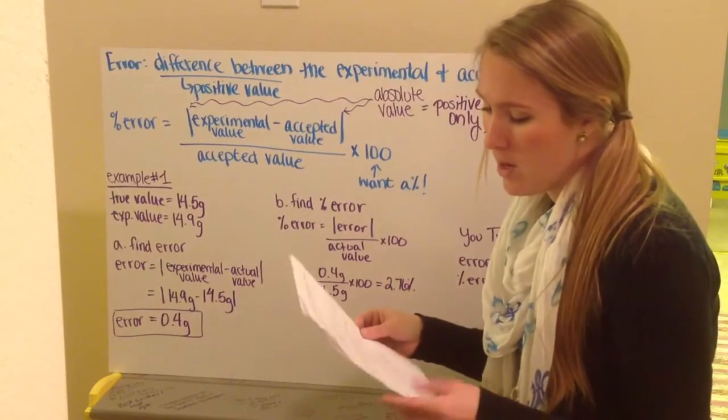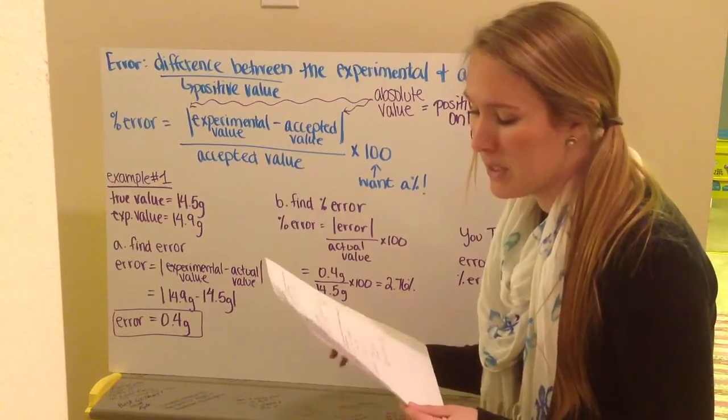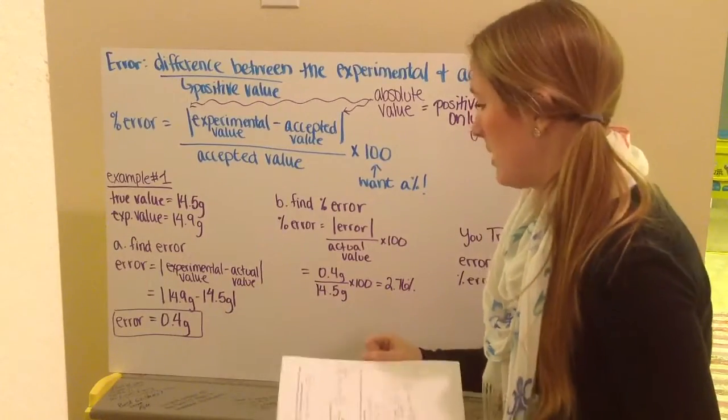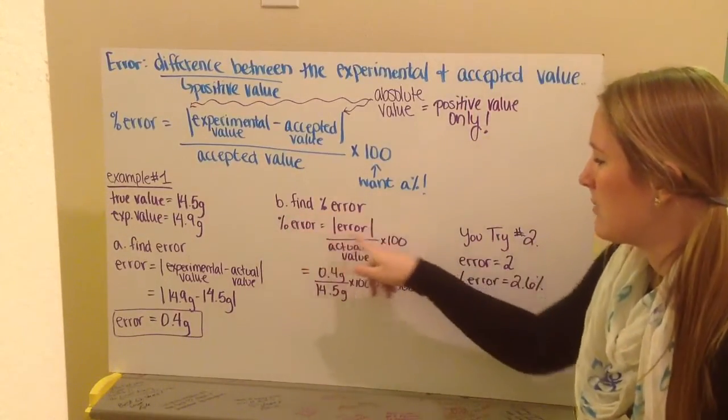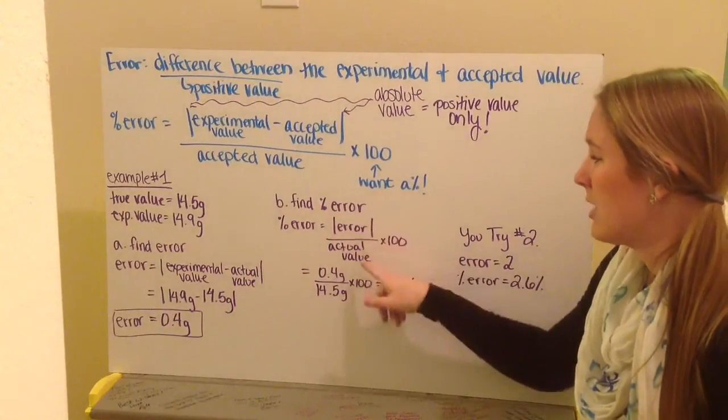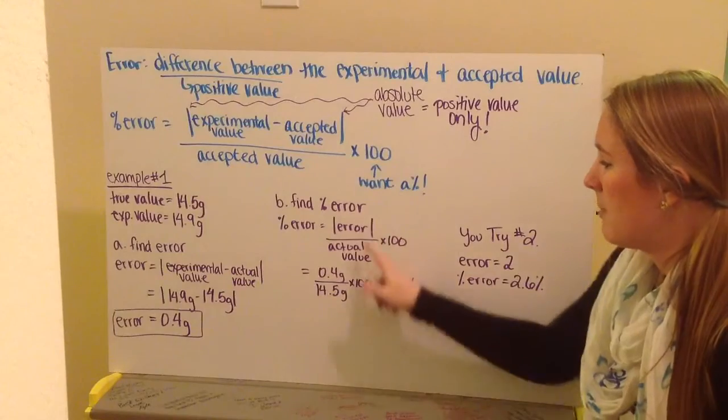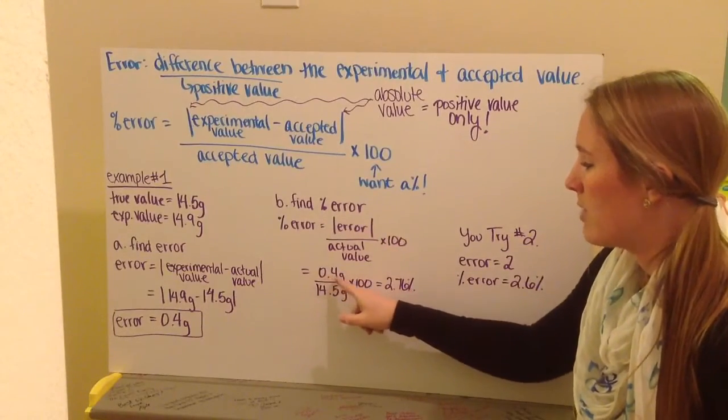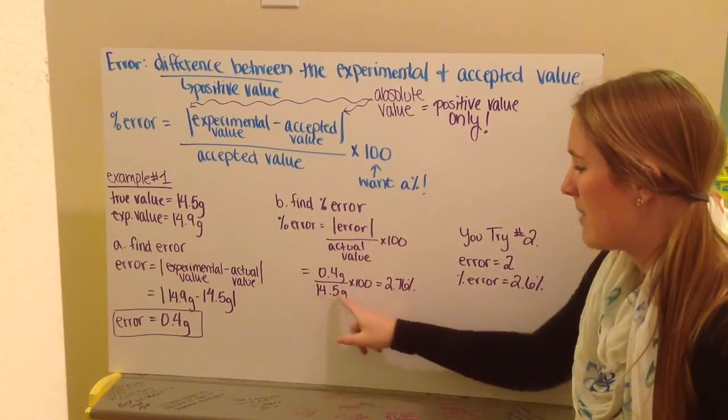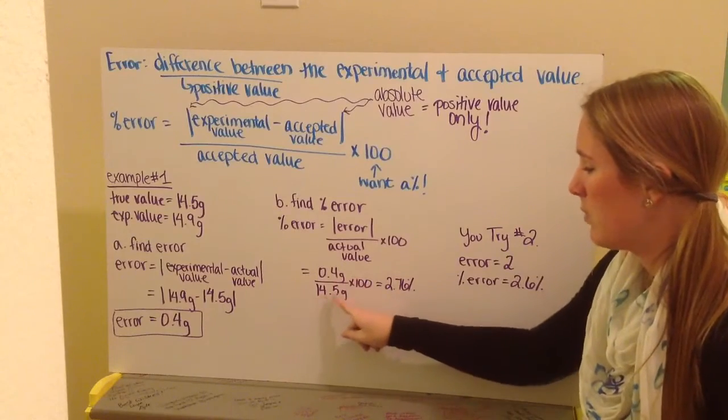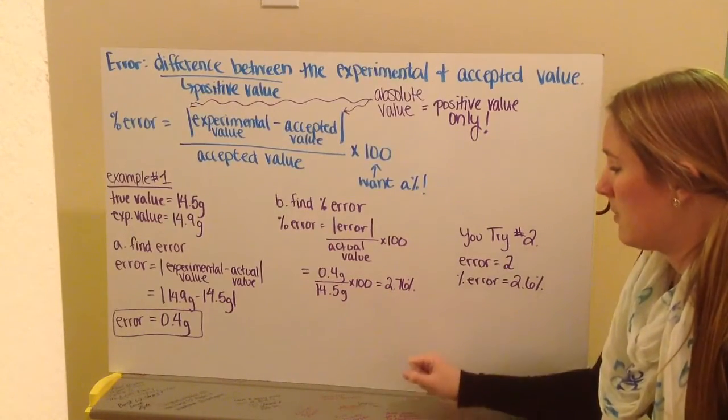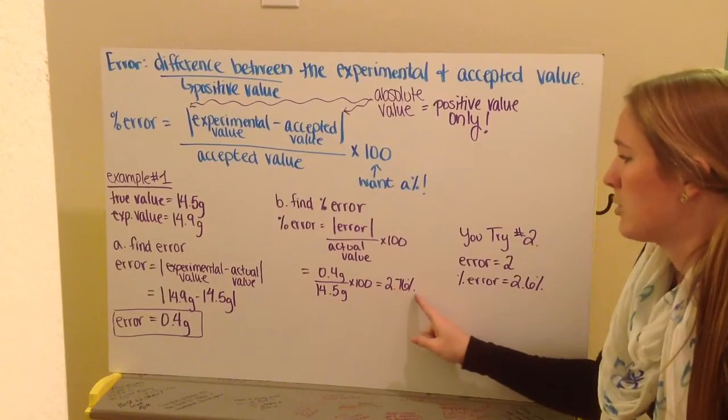Letter B, or the second part, says, what is the percent error for this measurement? Well, my percent error is my amount of error divided by my actual value multiplied times 100. My error is 0.4 grams divided by my actual value of 14.5 grams multiplied times 100 gives me 2.76 grams.